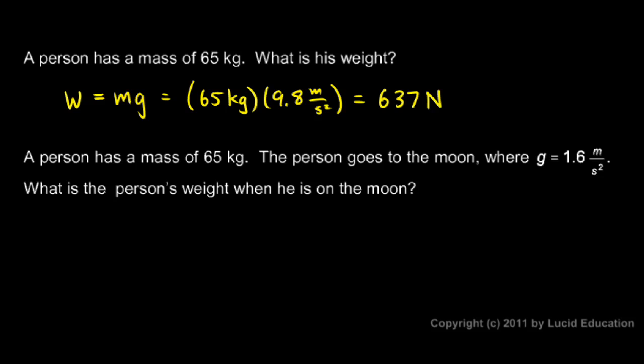Now, in the second part of this problem, a person has a mass of 65 kilograms, and they go to the moon. And on the moon, the acceleration due to gravity is less than on the earth, because the moon is smaller. And we're told here that it's 1.6 meters per second squared. What is the person's weight when he is on the moon? Well, the same equation applies, W equals mg, and the mass is still 65 kilograms.